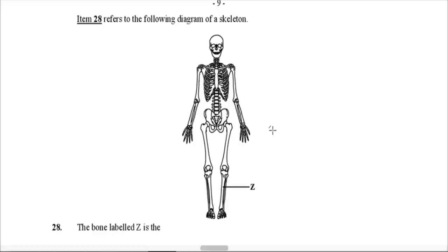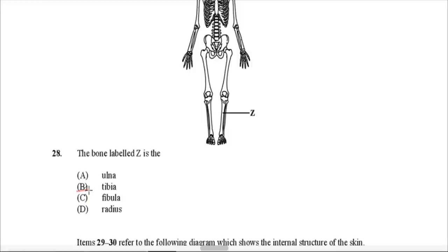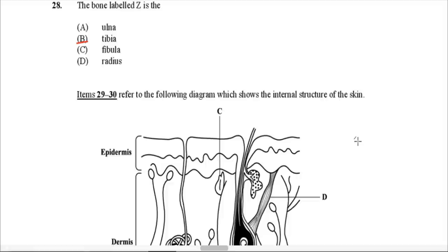Item 28 refers to a diagram of a skeleton. The bone labeled Z is pointing at the tibia, also known as the shin bone. The fibula is the smaller bone to the side towards the back. So B is the correct answer — the tibia.